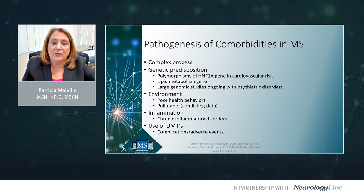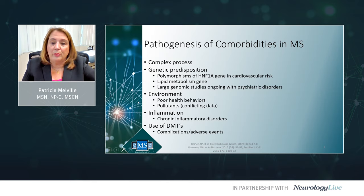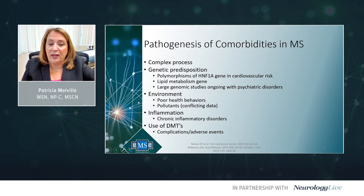The pathogenesis of comorbidities in MS is very complex. There are studies looking at genetic predisposition, including the HNF1A gene as a cardiovascular risk factor and the lipid metabolism gene, and large genomic studies ongoing with psychiatric disorders including bipolar disease, depression, and schizophrenia. The environment may also play a role. Poor health behaviors such as obesity, lack of exercise, smoking, and substance abuse may contribute, as may air pollutants. Patients with other chronic inflammatory disorders may be at increased risk for inflammation, which negatively impacts brain health, and DMTs may also come with adverse events that can promote comorbidities.